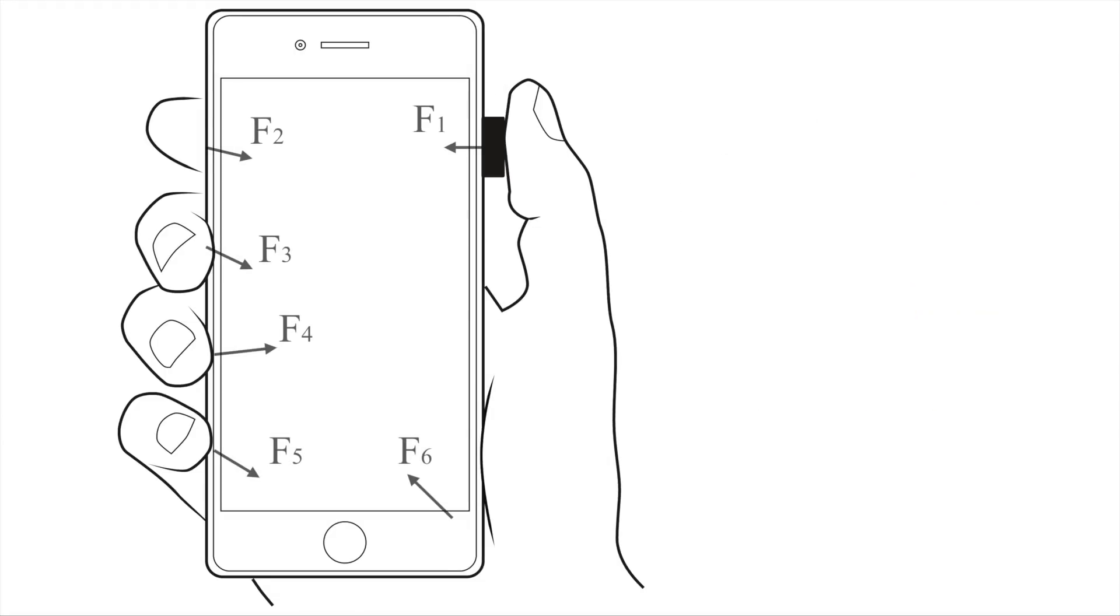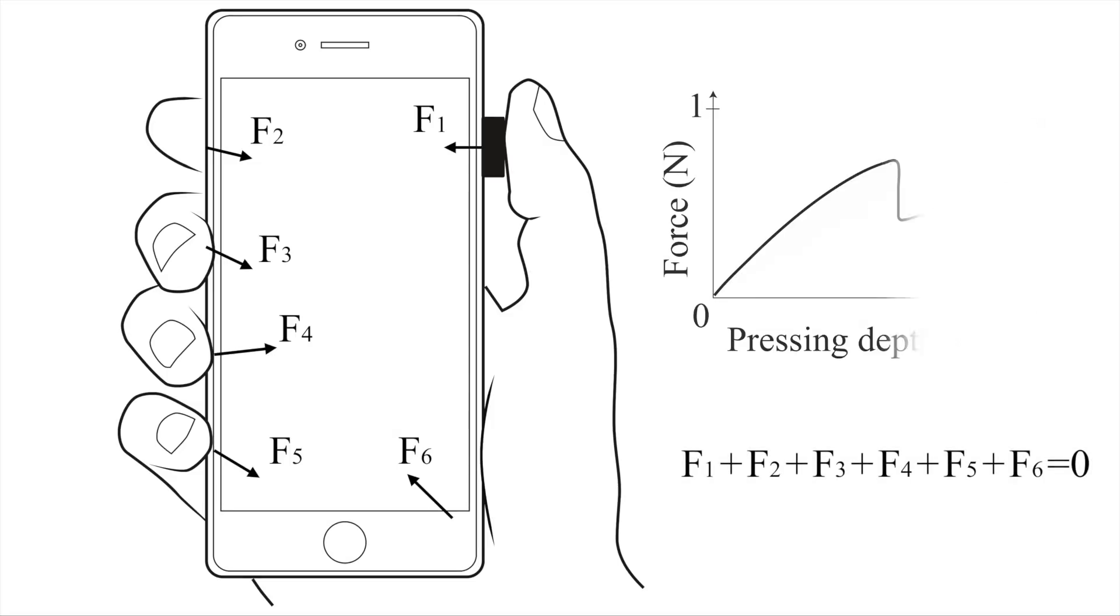Here's how this happens. When we hold a phone still, the finger forces applied on the phone balance each other. While the button is being pressed, its resistance force increases, and so does the finger's pressing force.